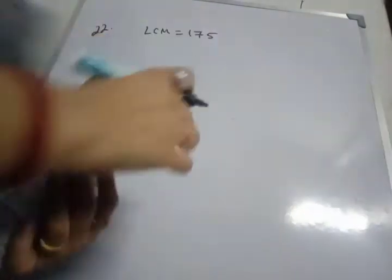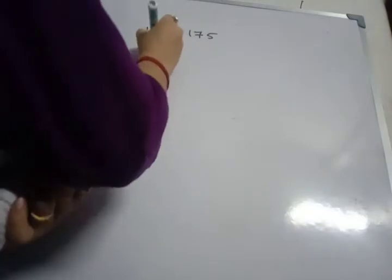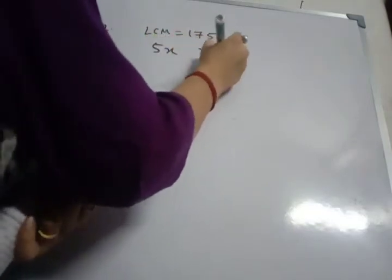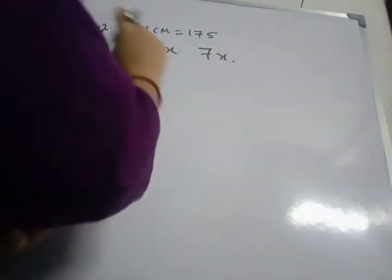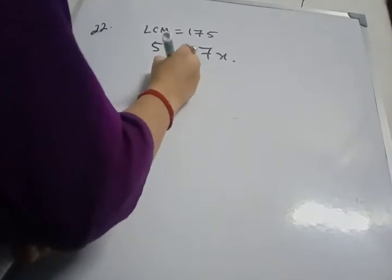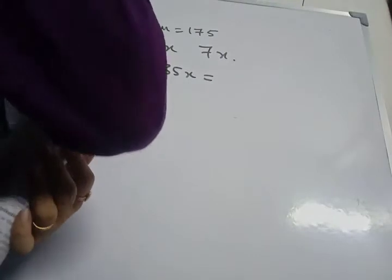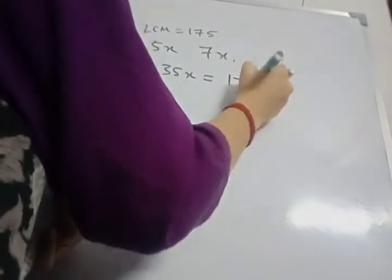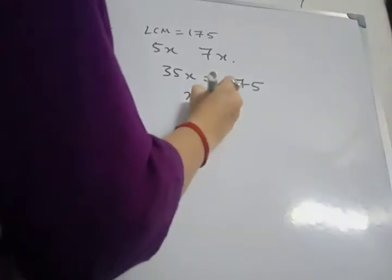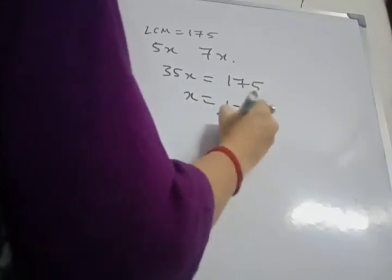So here also common unit be X. So the numbers are 5X and 7X. LCM of this 2 number is how much? It will be equals to 35X. If you take the LCM 5X and 7X you are going to get 35X as the LCM. This 35X equals to 175. So X equals to 175 by 35.